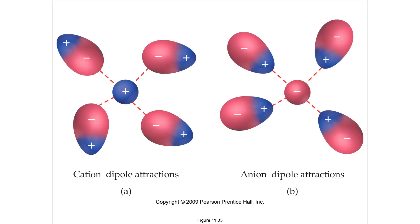This one is called an ion-dipole force. An ion is a positive or negative charge. A dipole, like the hydrochloric acid we saw earlier, has one side negative and the other side positive — or in the case of a water molecule, one side is positive and one side is negative. As long as it's a dipole, the negative side will be attracted to a cation and the positive side is attracted to the anion. This attraction is called an ion-dipole attraction, and it's also pretty strong.